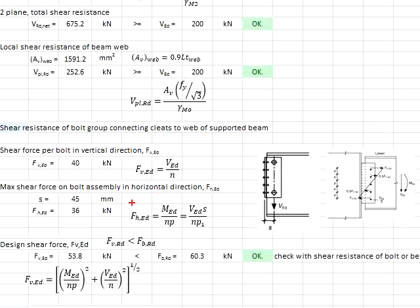Next, we need to determine the horizontal component of the force. It is determined by using this formula. There will be M_Ed divided by number of bolts times their spacing. Now, the question is, how do we determine the M_Ed?